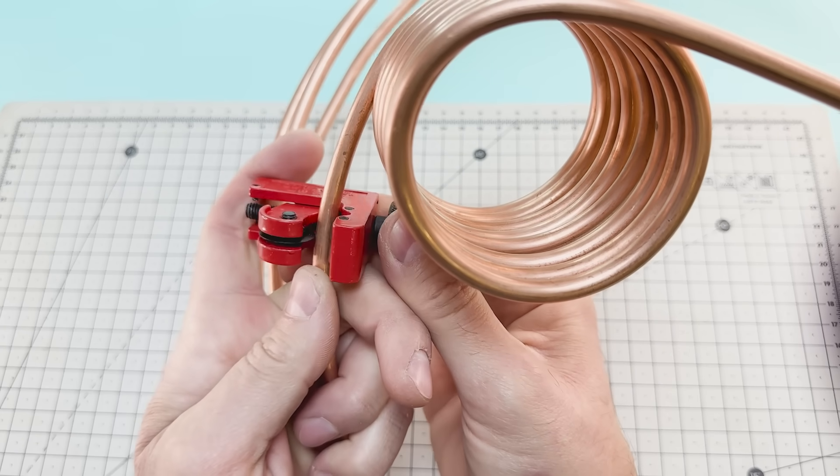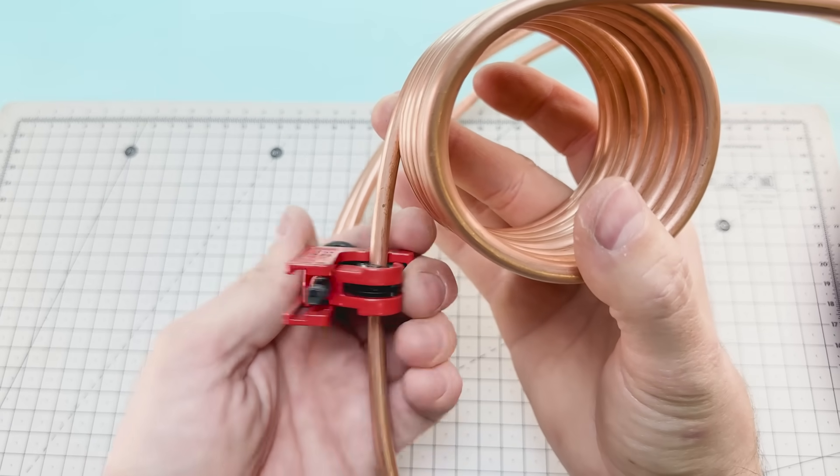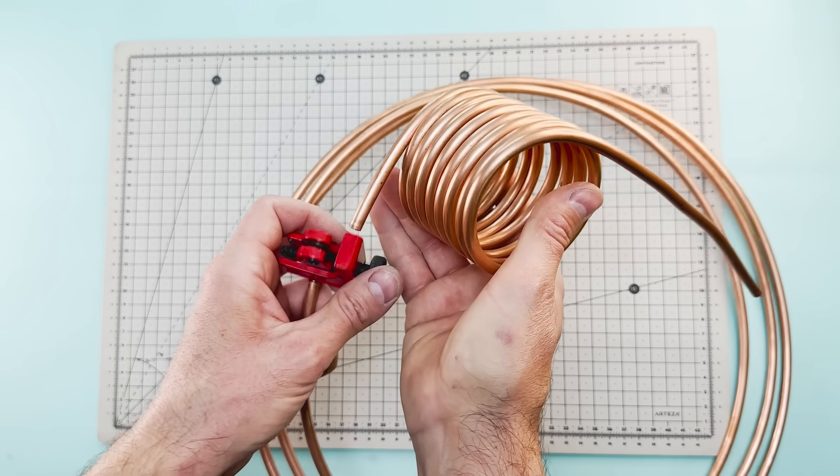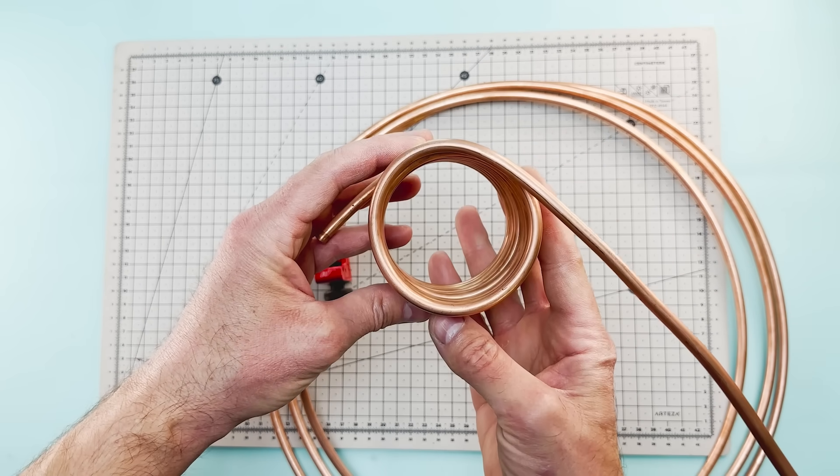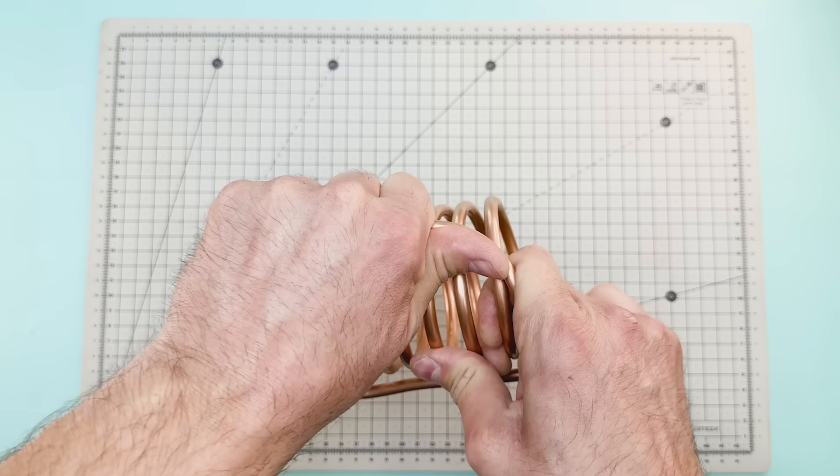Once we have about eight loops, we proceed to cut the tube and slightly bend the ends so we can connect them later on.